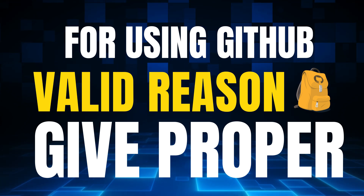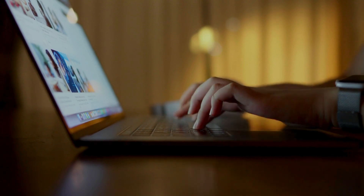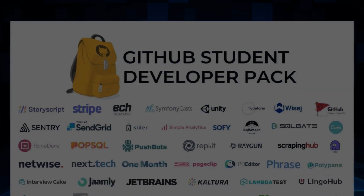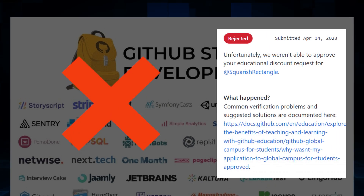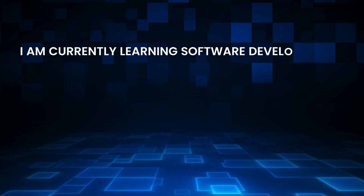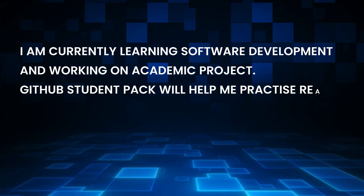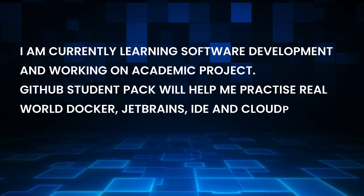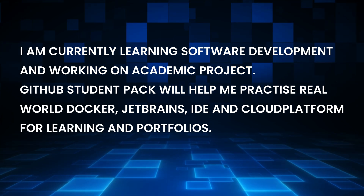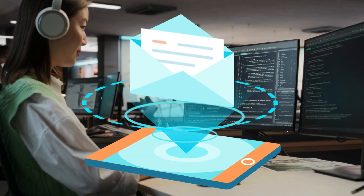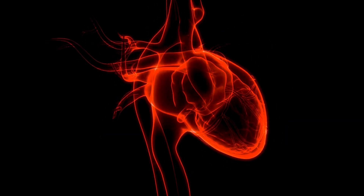Step 6: explain why you want the GitHub pack. Most people write 'for coding' or 'for projects' and they get rejected. Write something meaningful like: 'I am currently learning software development and working on academic projects. The GitHub Student Pack will help me practice real-world tools like Docker, JetBrains IDEs, and cloud platforms for my learning and portfolio.' Keep it simple, honest, and clear. After filling everything, hit Submit.